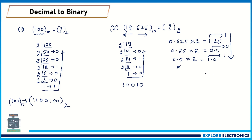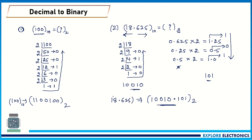Combining both parts, the binary equivalent of 18.625 is 10010.101. This is how we convert any decimal number with a decimal point into binary. Next, let us look at decimal to octal conversion.